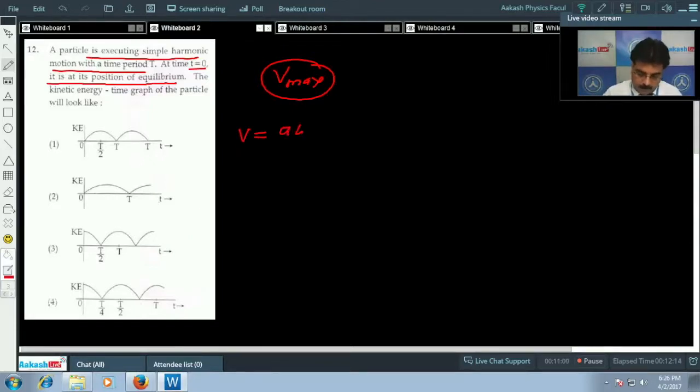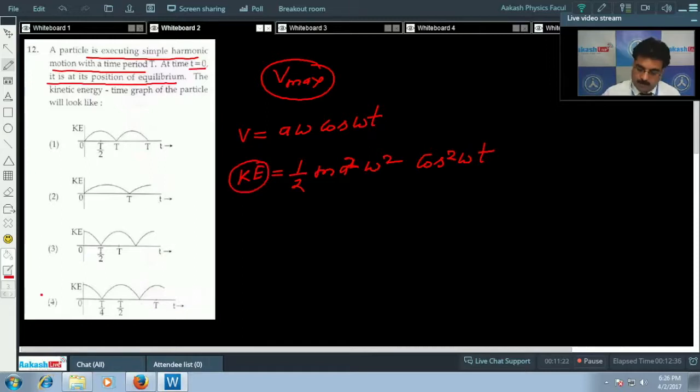Speed is given by A omega cos omega t. The formula for kinetic energy is half m A squared omega squared cos squared omega t. Here you could see at time t equals 0, kinetic energy is maximum. But we know that at the mean position the speed of the particle will be maximum. So what will be the conclusion? Graph number 1 is not correct. Similarly, second is not correct.